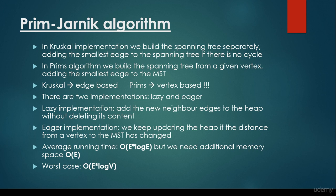There are two implementations for Prim-Jarnik algorithm: the lazy and the eager version. As far as the lazy implementation is concerned, we add the new neighbor edges to the heap without deleting its content. So we are not going to bother about the content of the heap, we are just going to add the new neighbors. We have to use a heap as the underlying abstract data type.